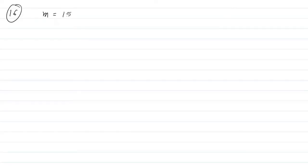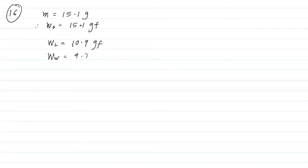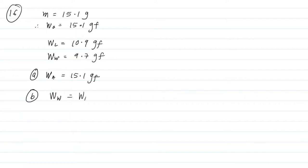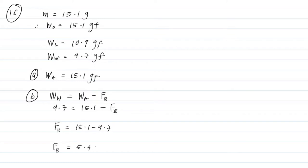The mass of the stone is 15.1 gram, so weight in air is 15.1 gram force. Weight in liquid is 10.9 gram force, and weight in water is 9.7 gram force. To find the volume of the stone, we use water because density of water is 1. Weight in water equals weight in air minus buoyant force, so buoyant force is 15.1 minus 9.7, which is 5.4 gram force.